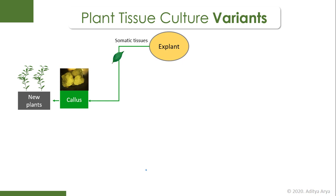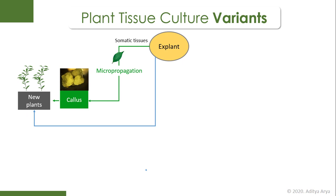This strategy of using somatic tissues and developing many plants from them is defined as micropropagation. The name micropropagation comes from the fact that you can take a small part of the plant, split it into small pieces, and develop hundreds of plants from a small explant.